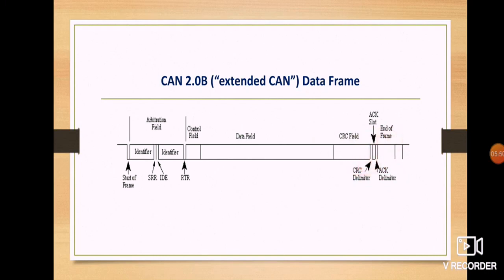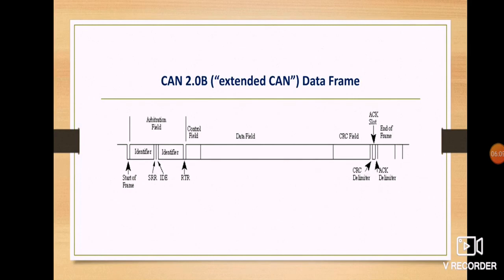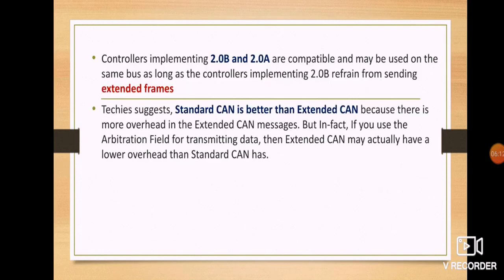The main difference between standard CAN and extended CAN is in the arbitration field: standard CAN has an 11-bit identifier, whereas extended CAN has a 29-bit identifier. 2 to the power of 11 gives the 11-bit address space, and 2 to the power of 29 gives the 29-bit address space. A controller implementing 2B is 2A compatible and can use the same bus, so standard frames and extended frames can coexist — both are compatible with each other with no incompatibility issues.